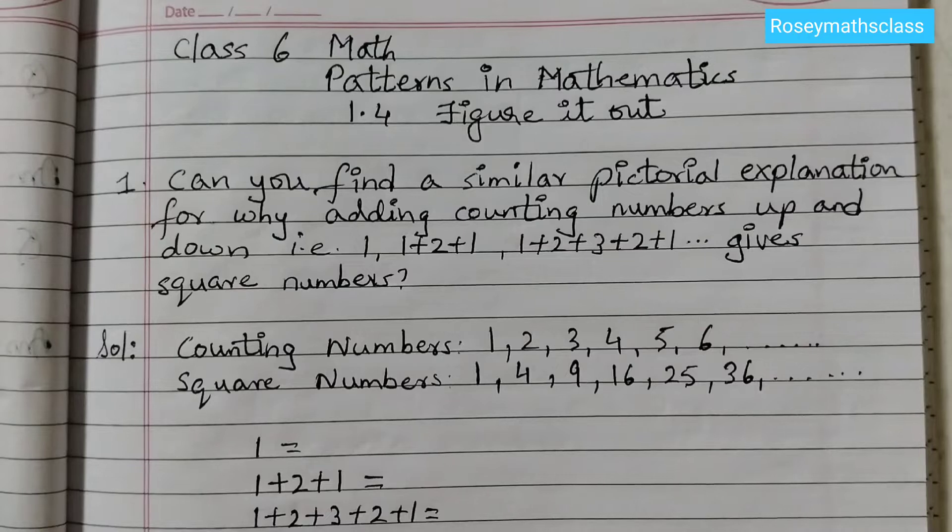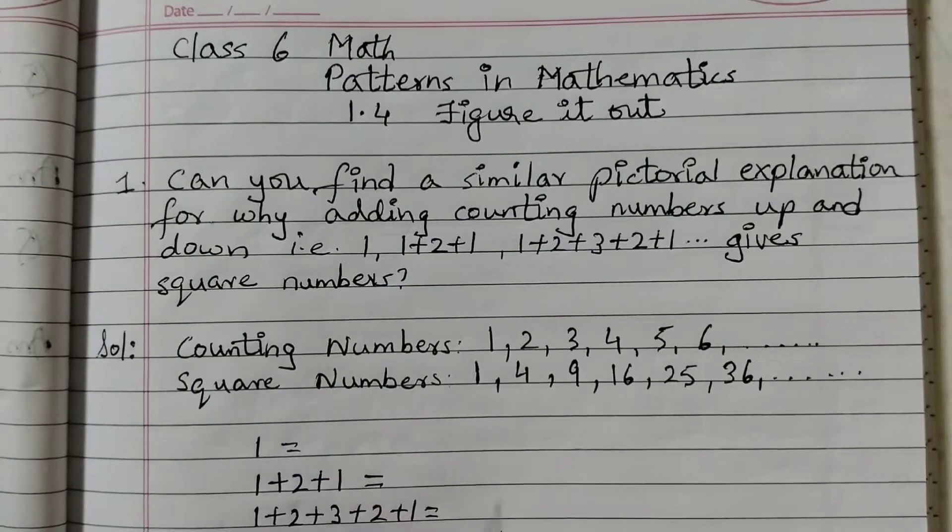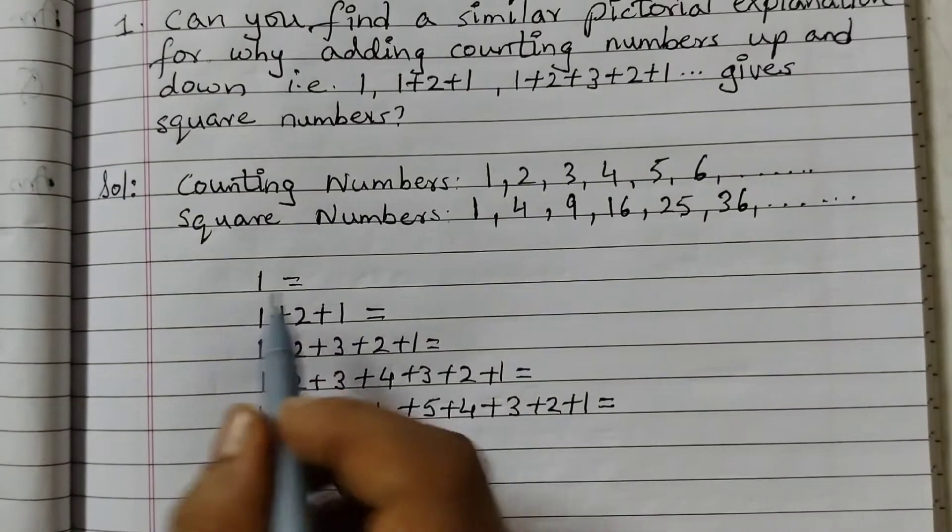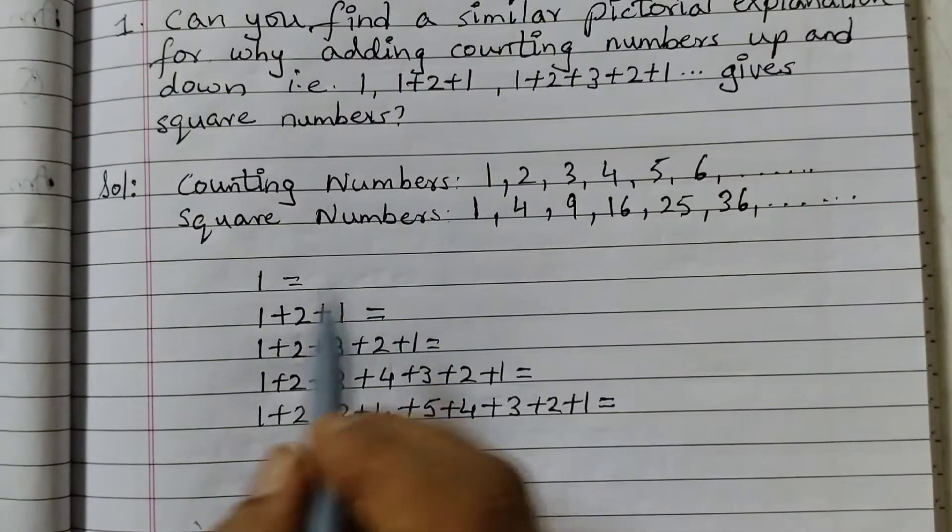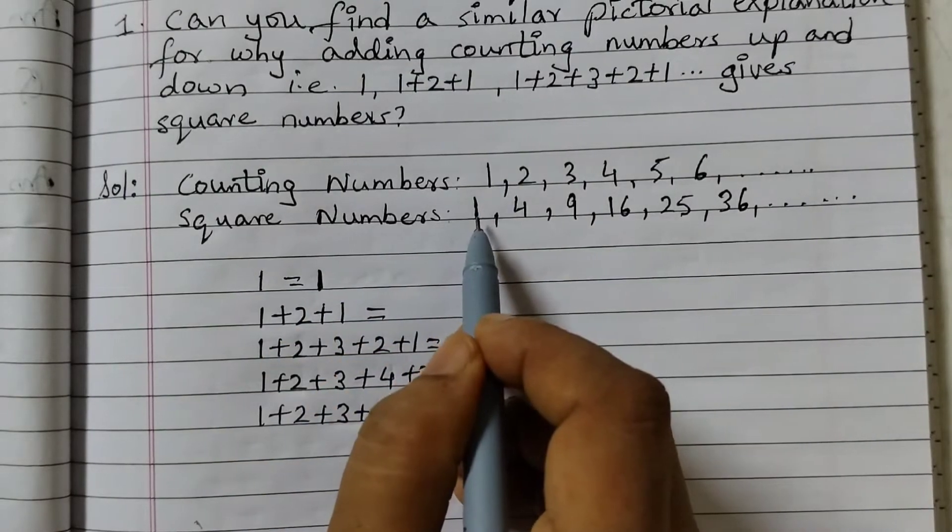We need to show the relation between adding this number up and down and square numbers. Now 1, I am taking this counting number 1, 1 is equal to 1, the first one.